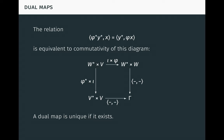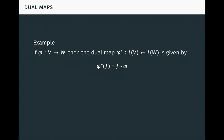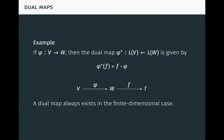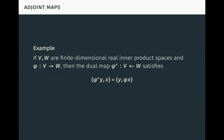It's immediate from non-degeneracy of the scalar product that a dual map is unique if it exists. As an example, if phi is a linear map from V to W, then the dual map phi-star to LV from LW is given by precomposition of phi. This can be visualized in this diagram. It follows from this example and the theorem on linear forms that a dual map always exists in the finite-dimensional case. As another example, if V and W are finite-dimensional real inner product spaces and phi is a linear map from V to W, then the dual map phi-star to V from W satisfies phi-star y times x equals y times phi x under the inner products, for all y in W and x in V. Therefore phi-star is just the familiar adjoint of phi.